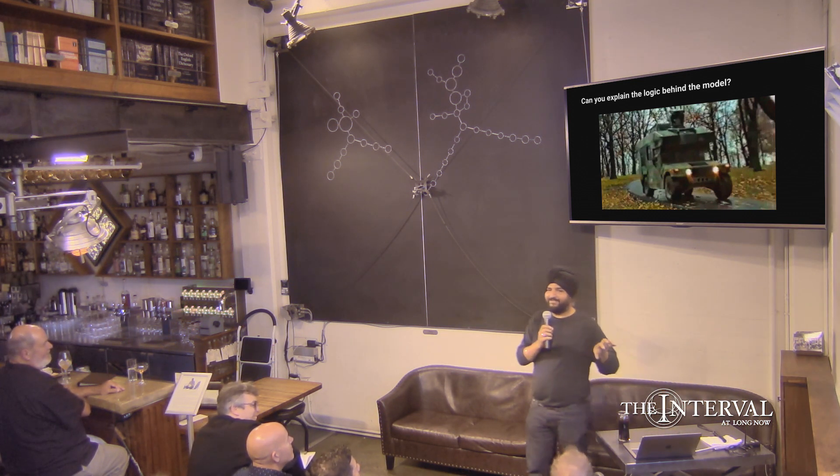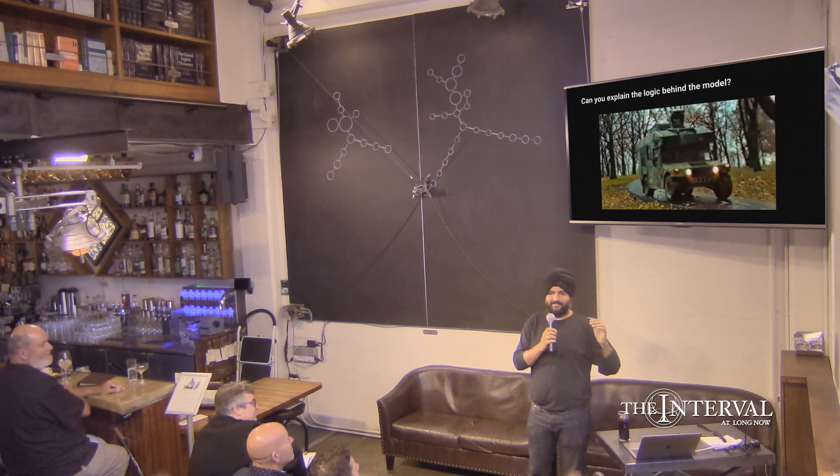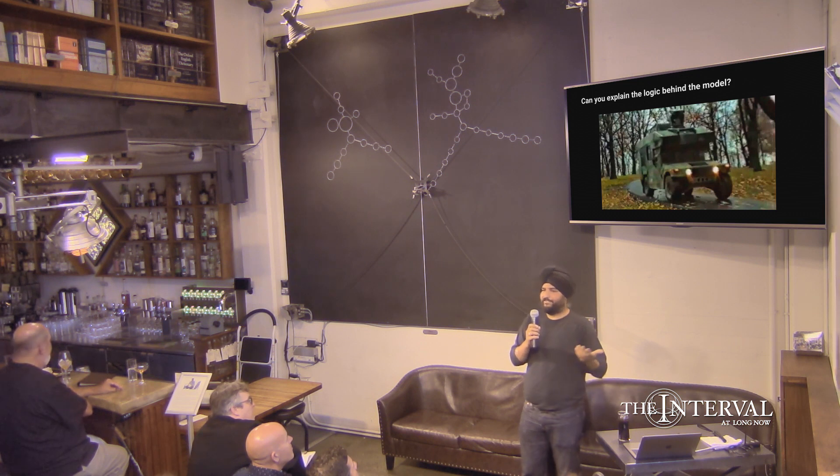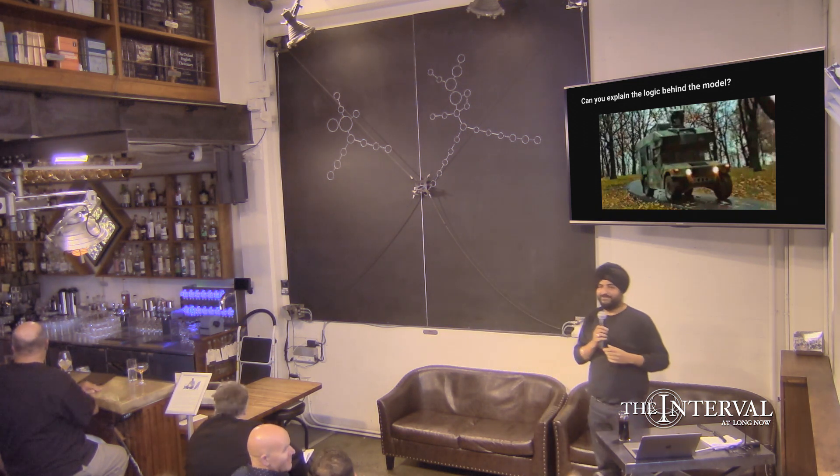And it turned out that the model had learned to basically see the sky as being gray. So if the sky was blue, the model was like, what just happened? I don't know what to do anymore.